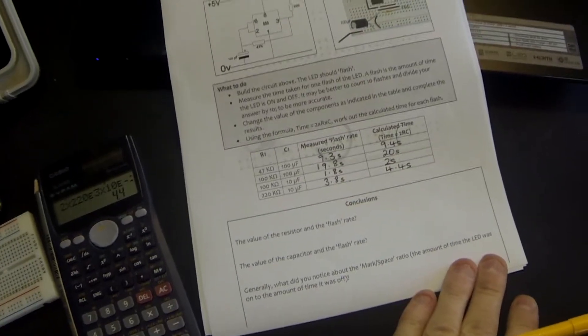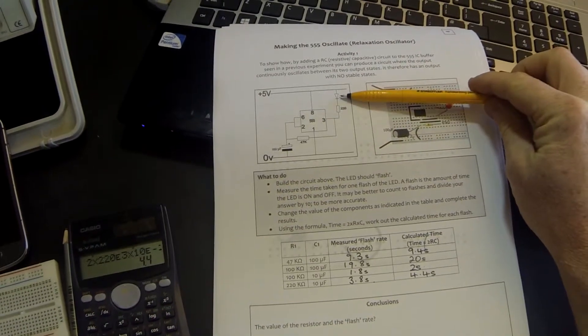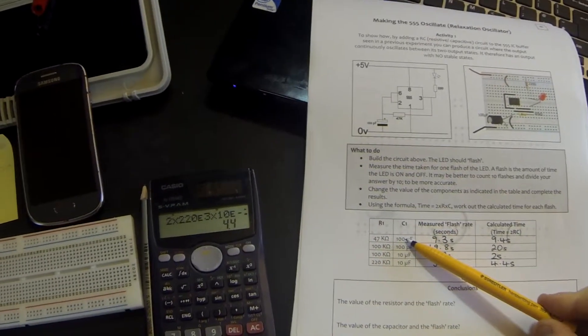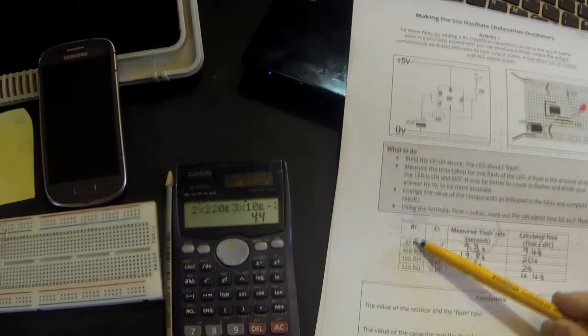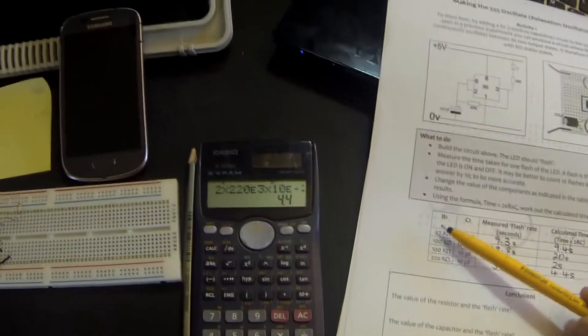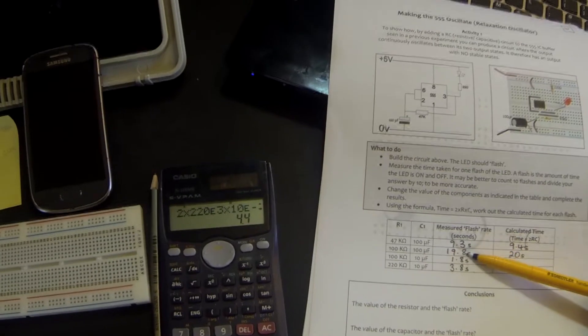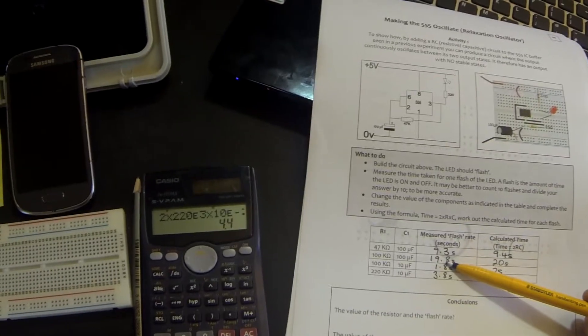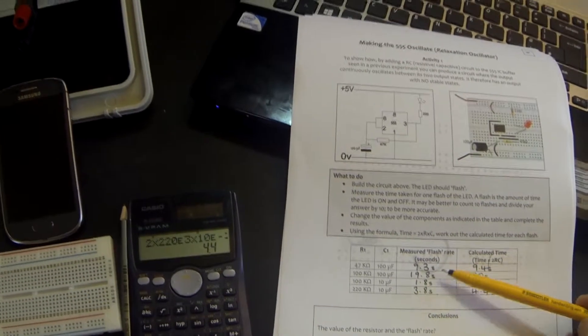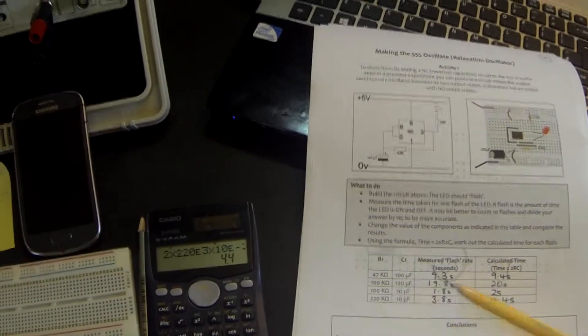Now, what have we learned from this experiment? Well, the important thing to learn is, what happens to that flash rate when we change the value of the resistor? Well, if we look here, here we kept the same value of capacitor, but we changed the value of resistor. And if you look at it, we almost doubled. In fact, just slightly over doubled the value of the resistor. But, our time went from 9.3 to 19.8. So, what we're saying is that if we increase the value of the resistor, we increase the length of time that it takes to flash. So, it actually flashes at a slower rate.